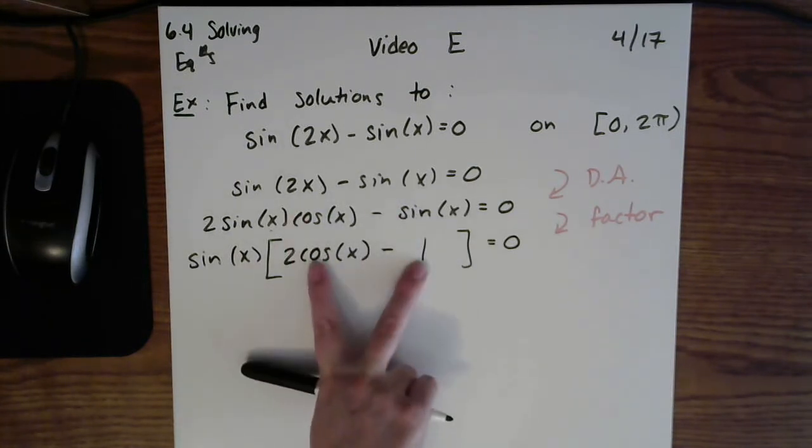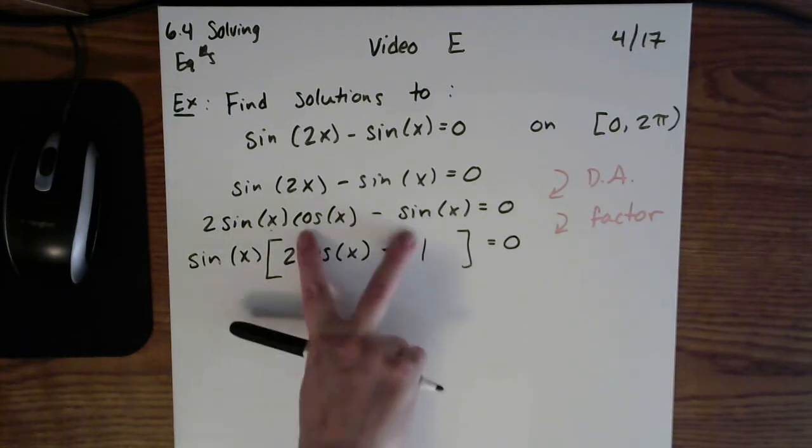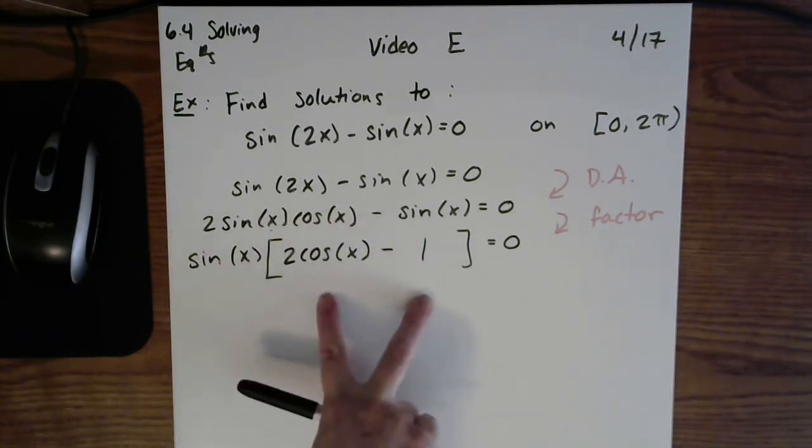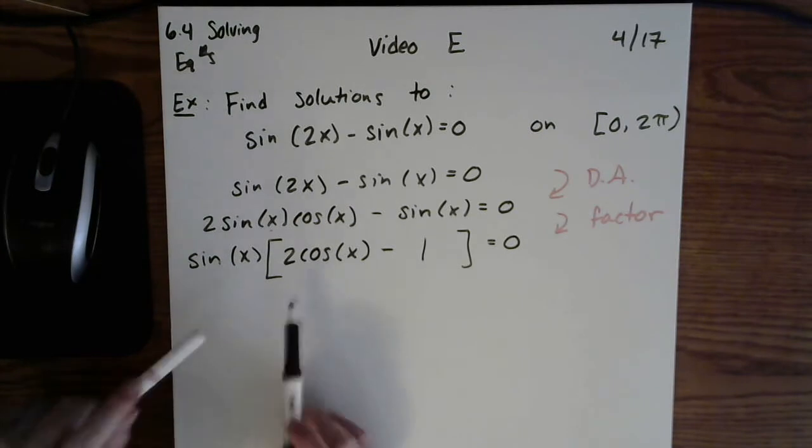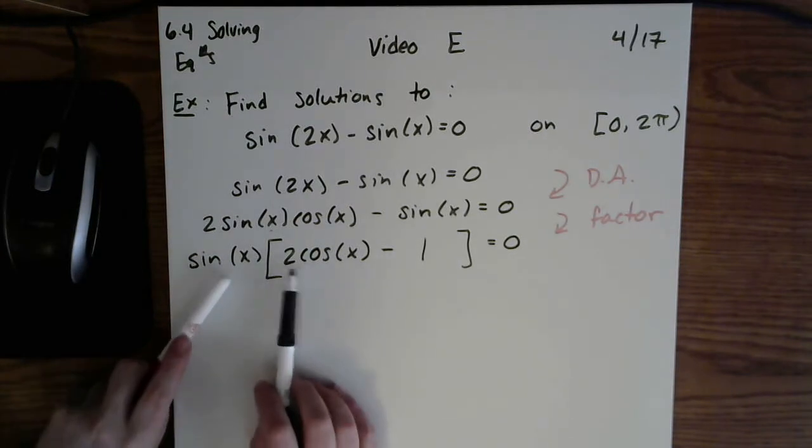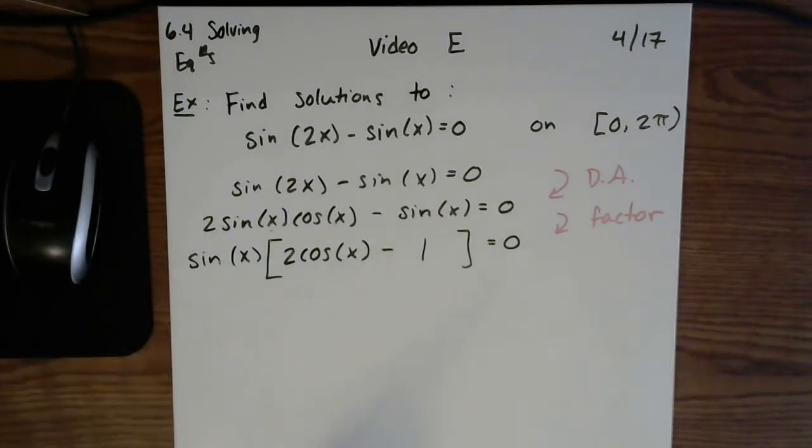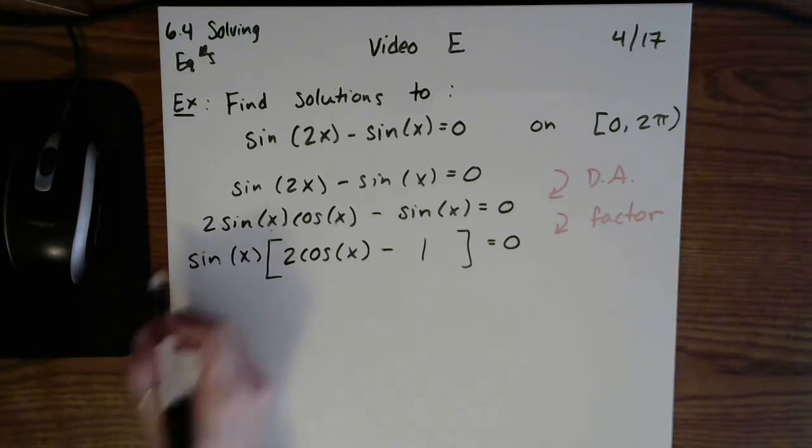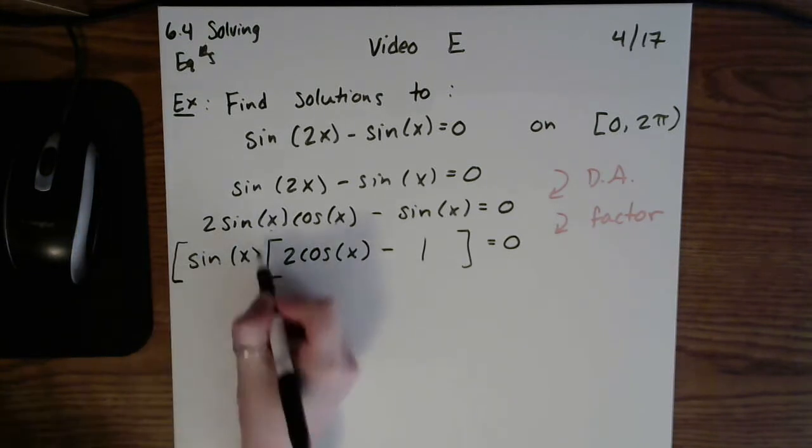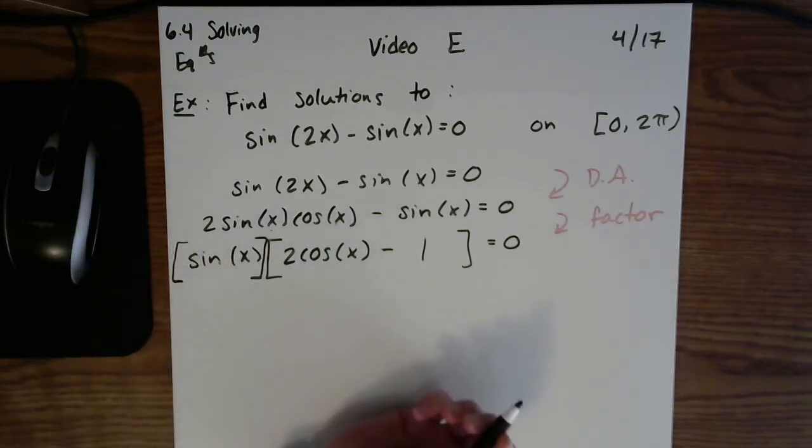So you have two terms inside of here. That should happen when factoring. You should have the same number of terms in your set of parentheses as you did in the previous step. Of course you could always double check quickly by redistributing 2sin(x)cos(x) - sin(x). So our factoring looks fine. Now in algebra, maybe I'll put this in brackets to clarify.